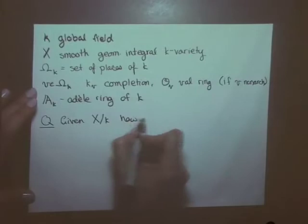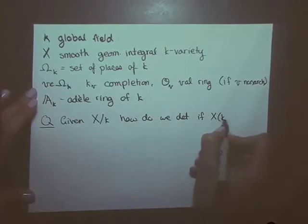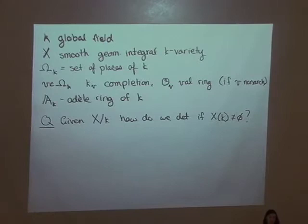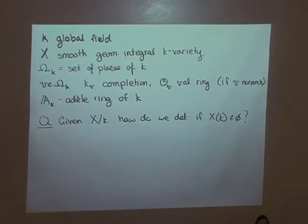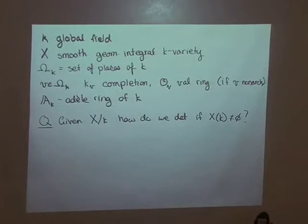Our question is: given X over K, how do we determine if X(K) is non-empty? If some oracle told you that X does indeed have a rational point, you can just search until you find one. But if you think there is not one, how do you show that there's not one, or how do you know you should give up searching? We don't have a complete answer, but I'm going to talk about some ways we can provably show that the set of K-points is empty.